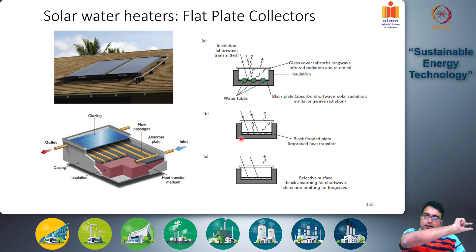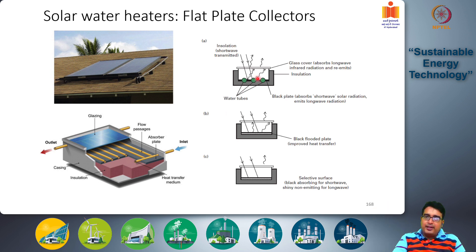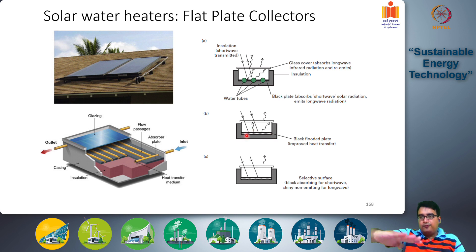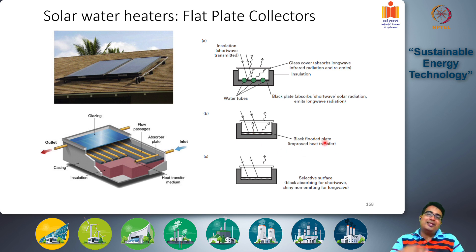Another design improvement replaces the array of separate tubes with a continuous rectangular duct, creating a flooded plate design. The absorber plate is at the top and the entire fluid flows continuously through the rectangular duct section below. This improves contact between the plate and fluid, thereby improving heat transfer.